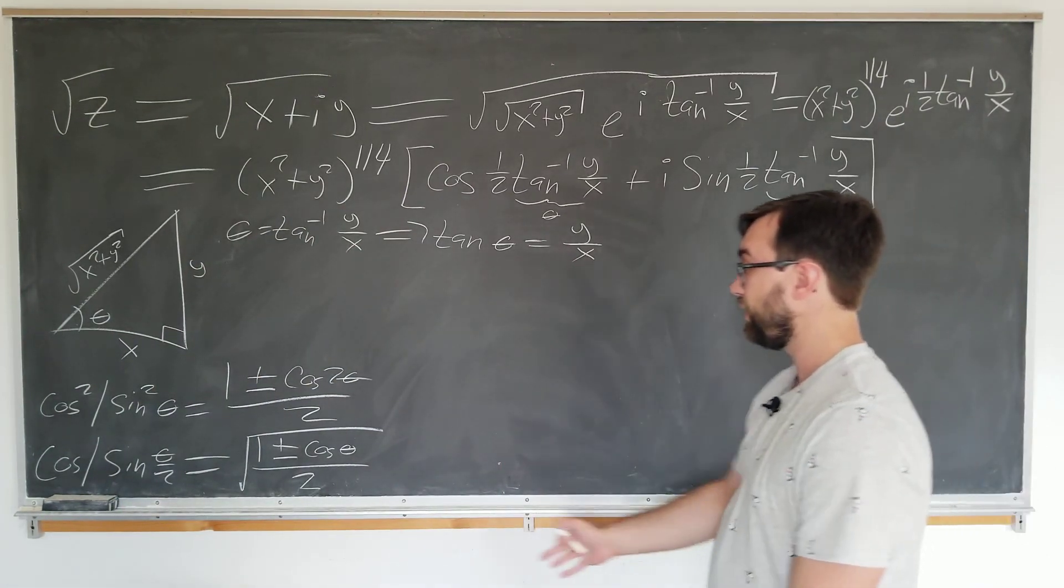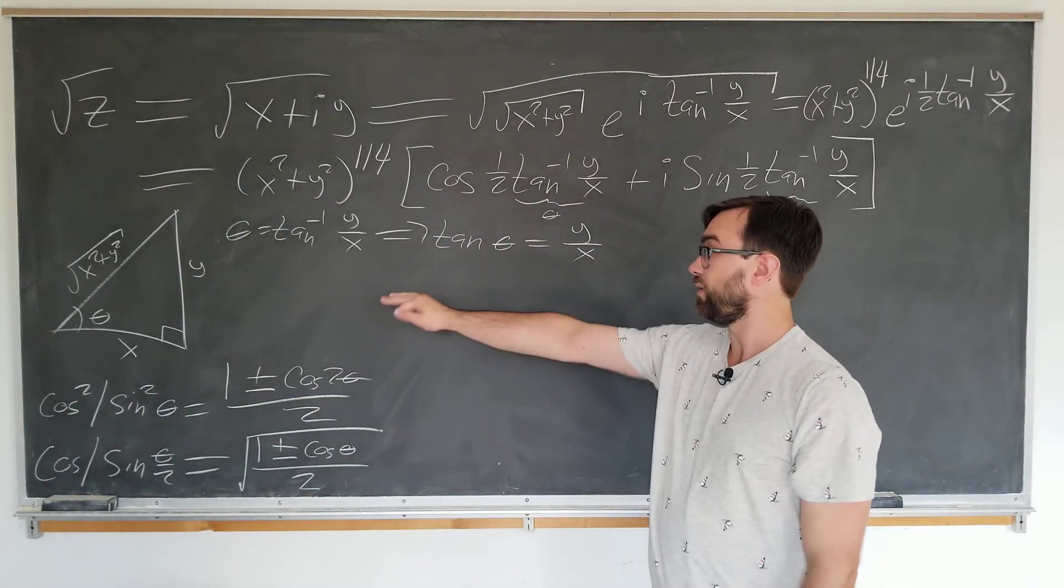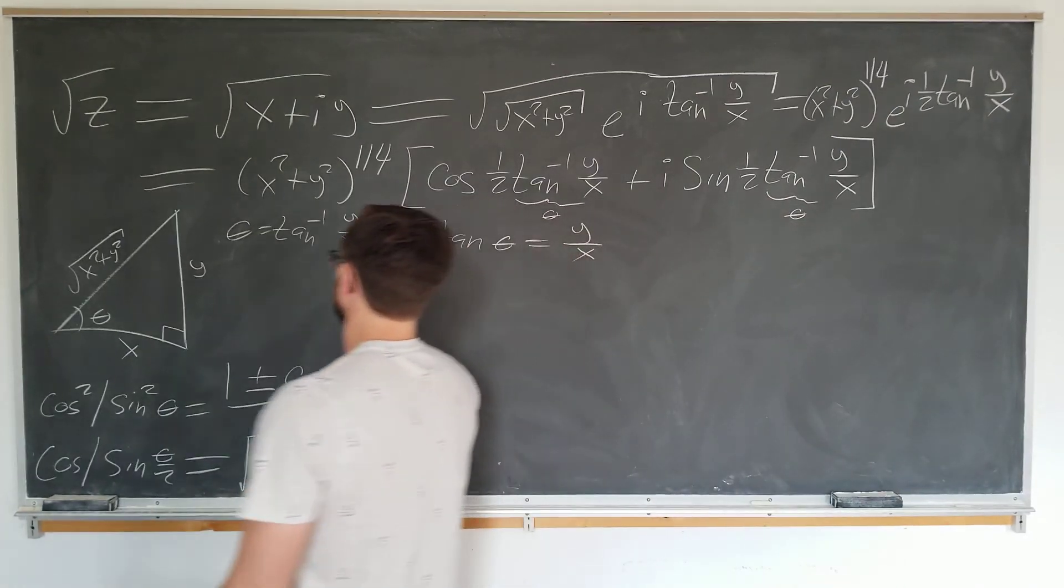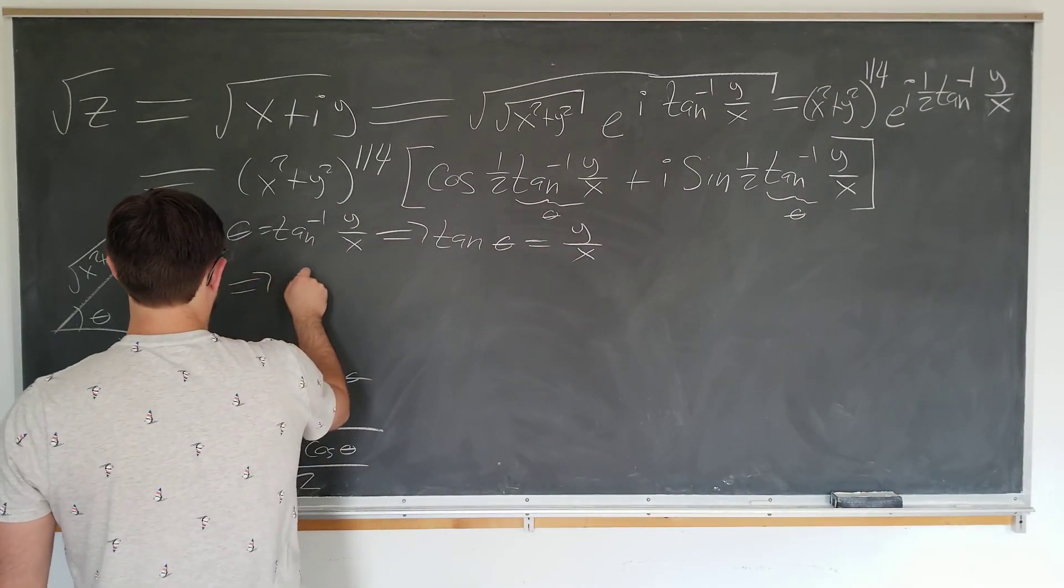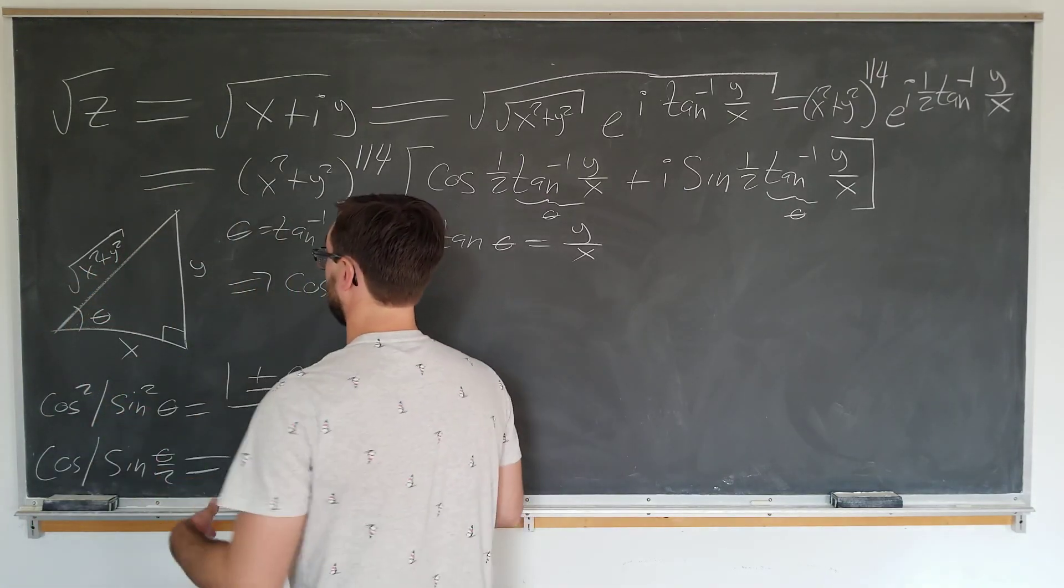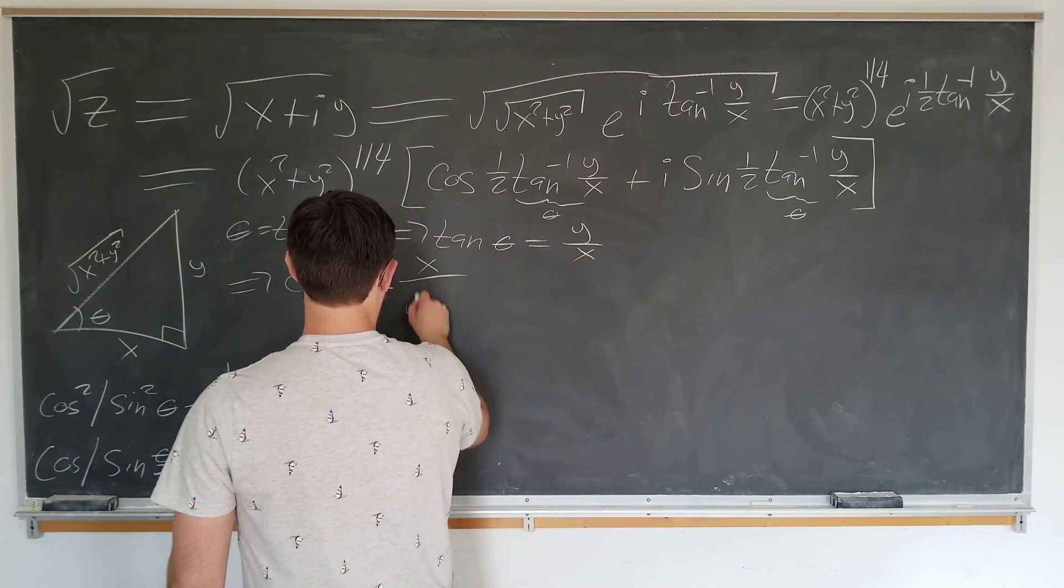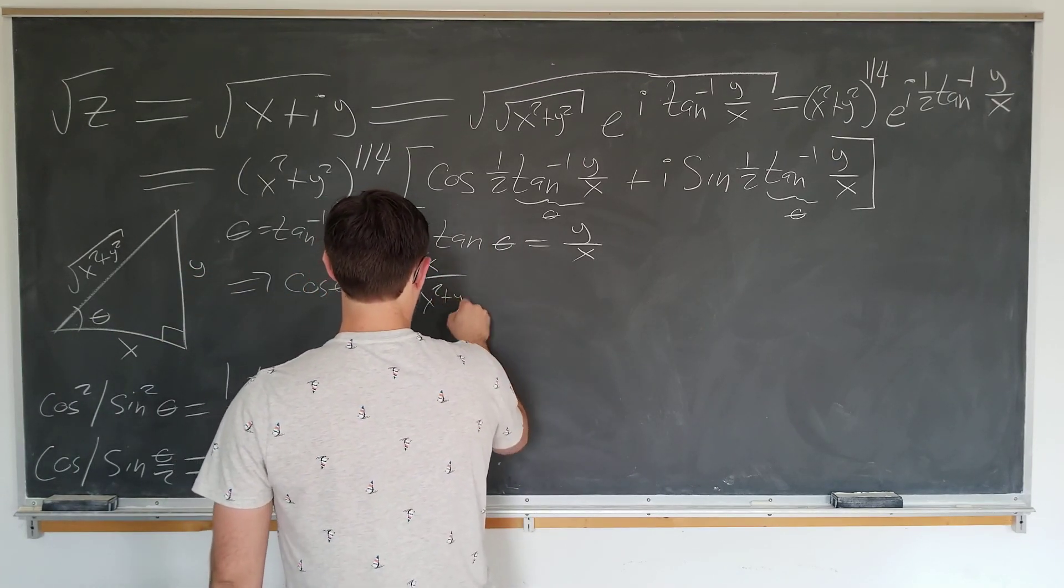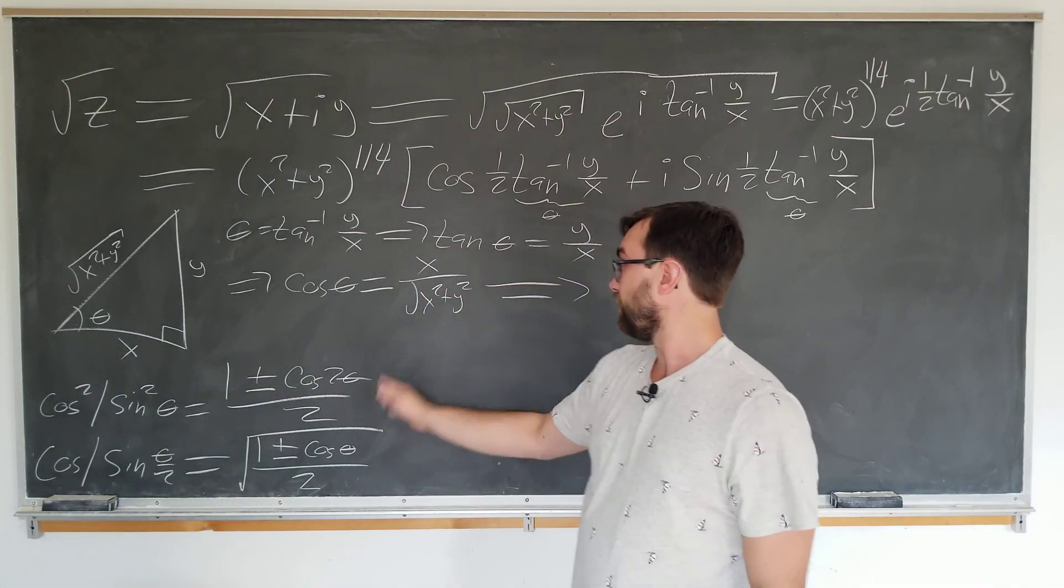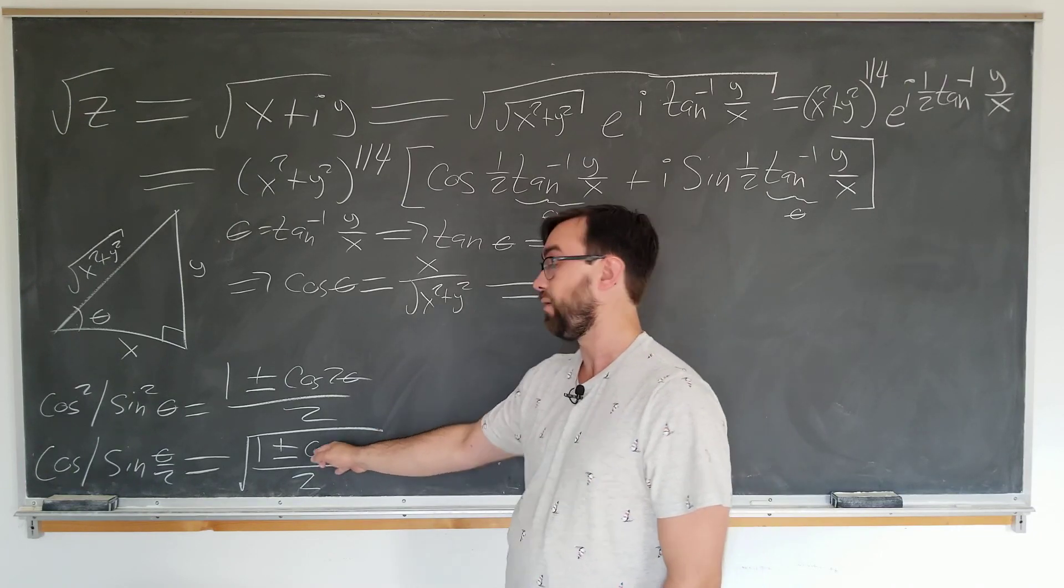We see that this formula only depends on the cosine. So we only have to extract the cosine from this diagram. This tells us that cosine of theta is equal to, well, it's just the adjacent over the hypotenuse, of course, x over the square root of x squared plus y squared is our cosine function. Now we just have to insert our expression for cosine theta into our identity here.